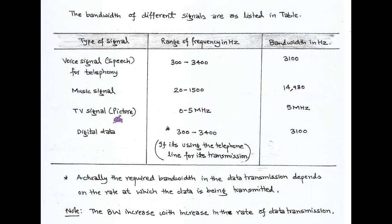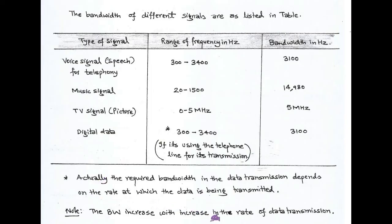For TV signals, the frequency range is 0 to 5 megahertz and the corresponding bandwidth is 5 megahertz. For digital data used in telephone lines, the frequency range is 300 to 3400 Hz with a bandwidth of 3100 Hz. One important point: the bandwidth required for data transmission depends upon the rate at which data is being transmitted. As bandwidth increases, the rate of data transmission also increases.